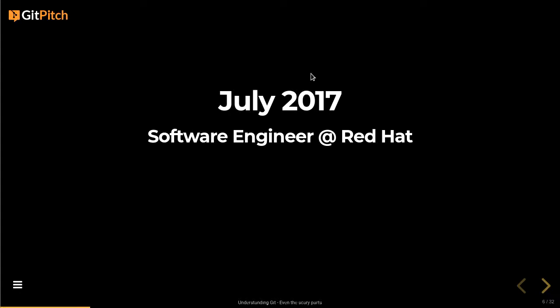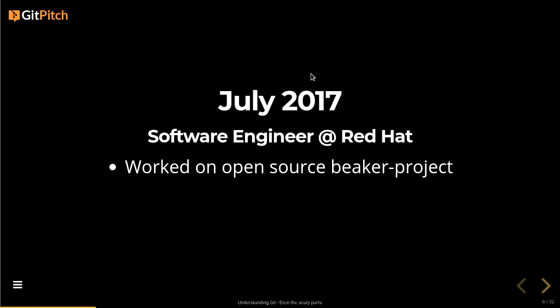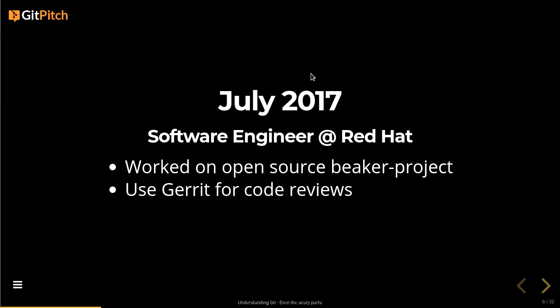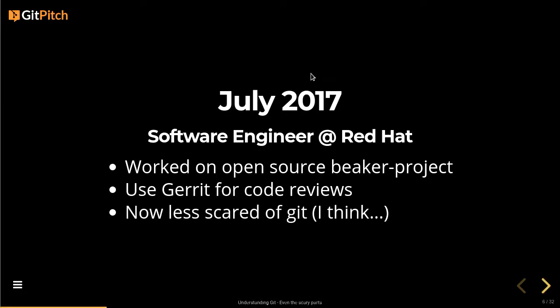Six months ago I started as a software engineer at Red Hat, working on the open source Beaker project. It's a bit more stringent in how we use Git. We use Gerrit for code reviews, and with Gerrit you're only allowed one commit per code review. If you make a mistake, you have to amend it. Also, if someone changes master and it conflicts with your branch, you have to rebase rather than merge, because a merge creates a merge commit, which creates another code review. It really enforced a lot of good practice.